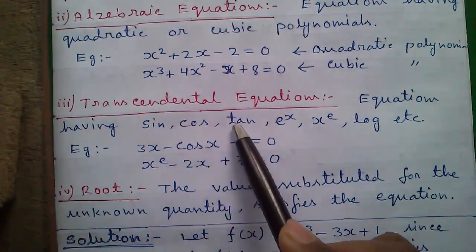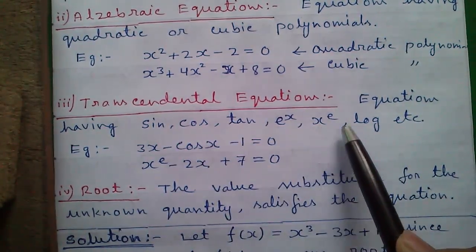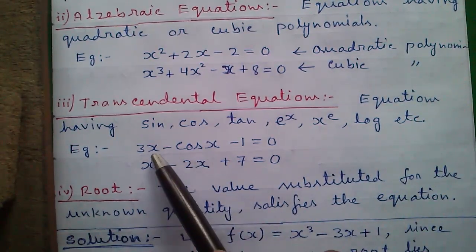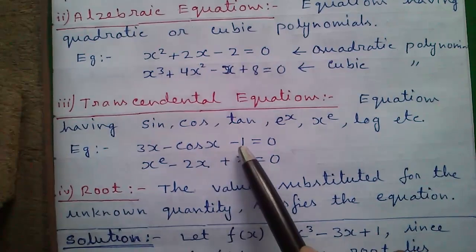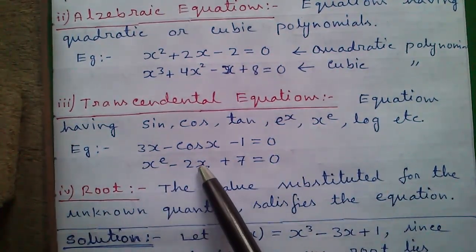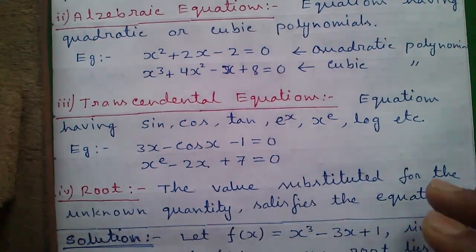Next, transcendental equations. Equations having sin, cos, tan, e^x, x^e, log, etc. are called transcendental equations. For example, 3x - cos x - 1 = 0 or x^e - 2x + 7 = 0.